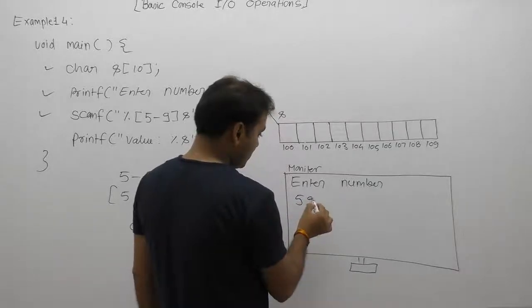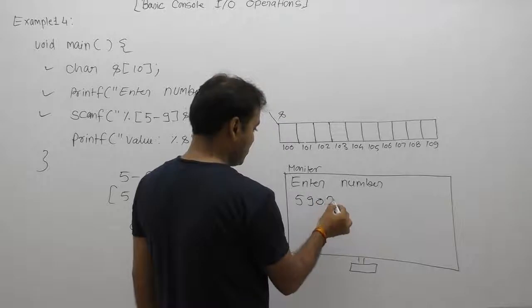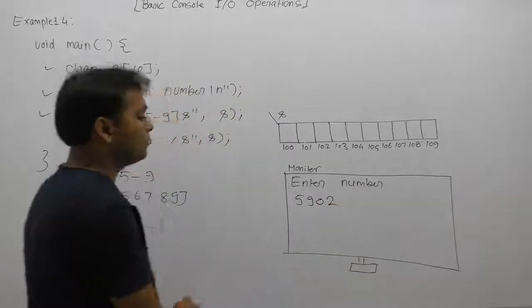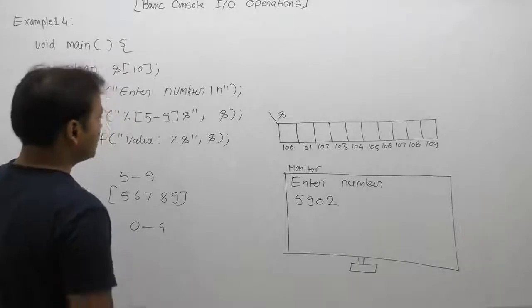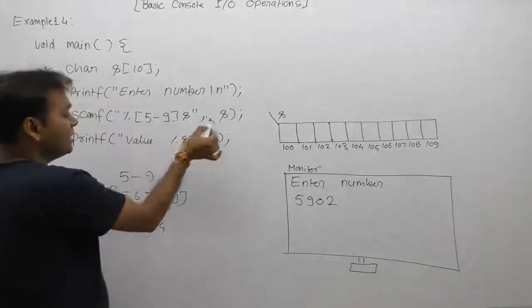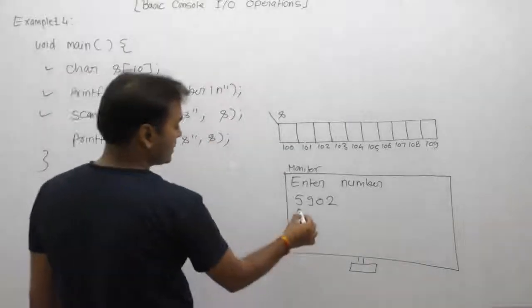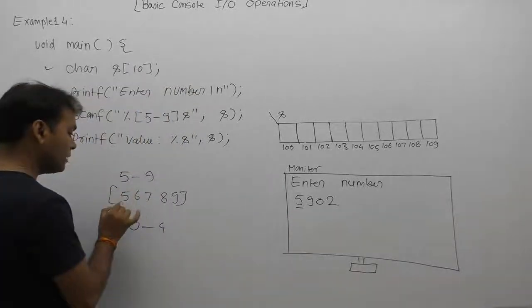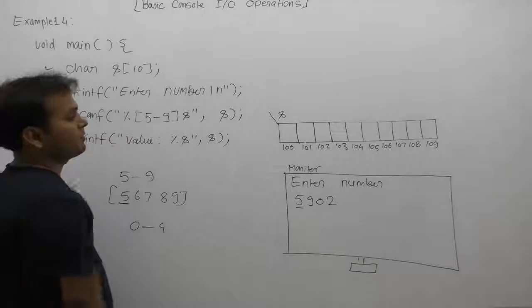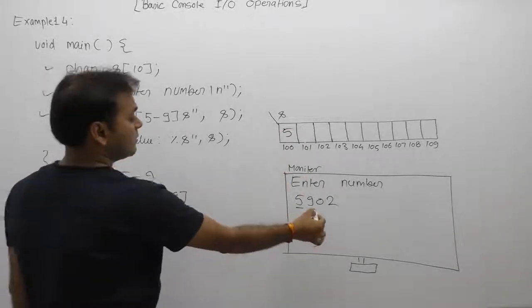Let's see how the scanner function reads according to the regular expression. First it reads 5. Five is a valid digit for the given regular expression, therefore it will be stored inside the array. Next one is 9, which is also valid.